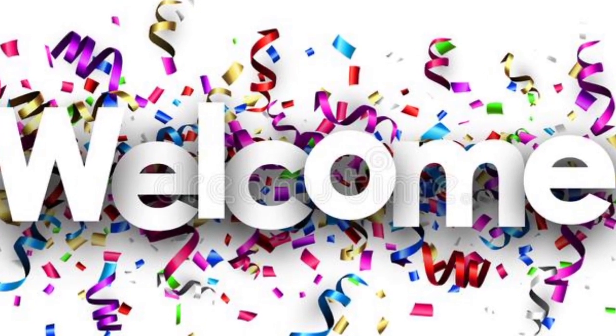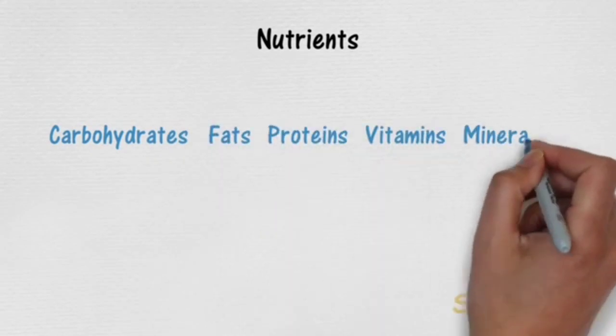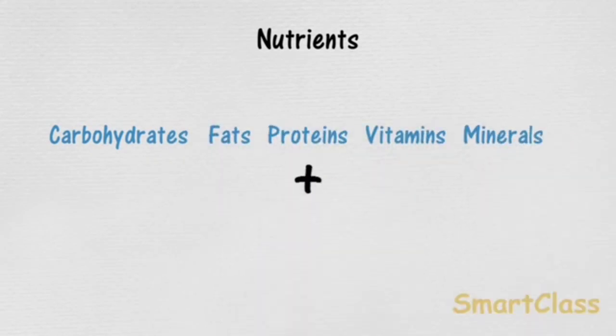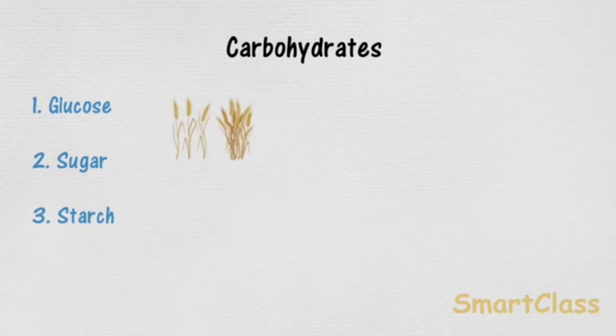Hello children, welcome to the ninth module. There are five major nutrients present in our food items along with water and roughage. Let us begin with carbohydrates. Carbohydrates are energy-giving nutrients. The main carbohydrates found in our food are in the form of starch, sugar, and glucose.